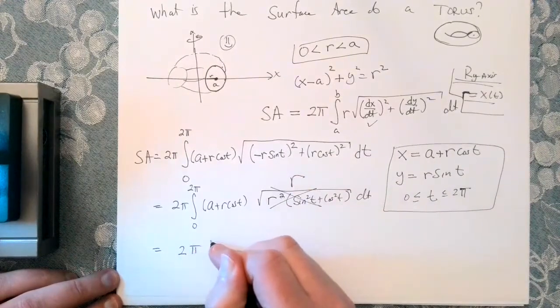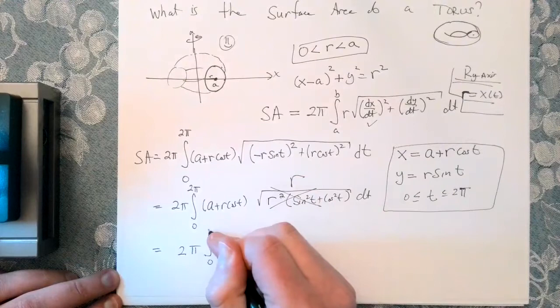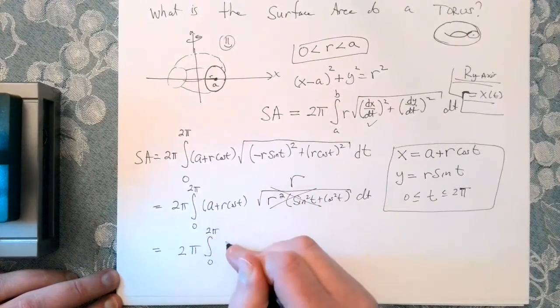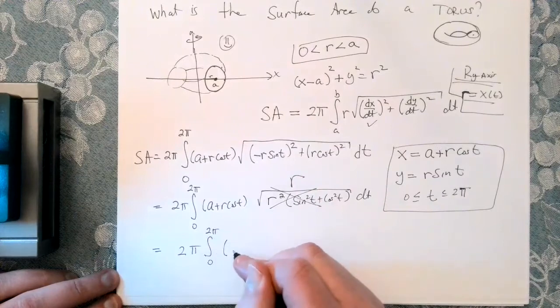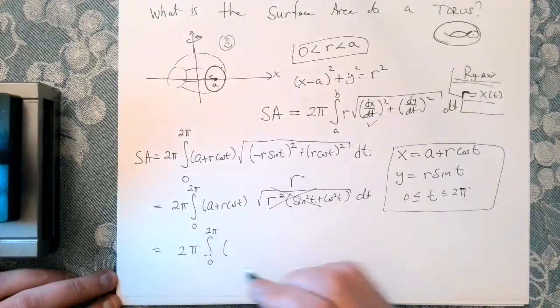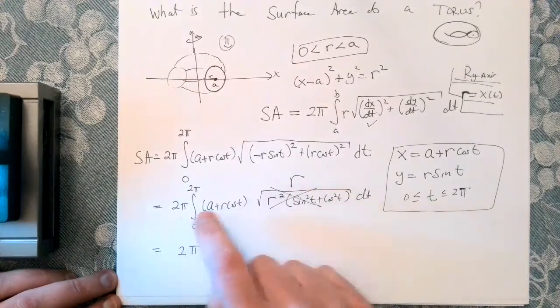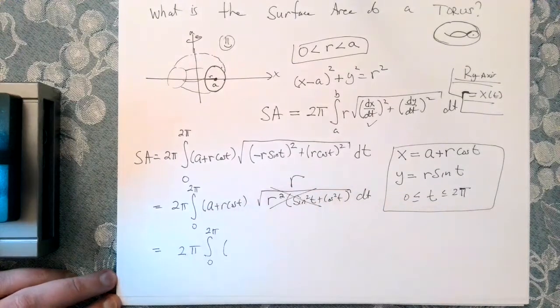So we're going to have an r squared here and an r squared here. I can factor that out. And I'll have a sine squared of t plus cosine squared of t, which we know is 1 dt. So this will just become r. And let's tidy that up a little bit. So it looks like we have, what do we have here?